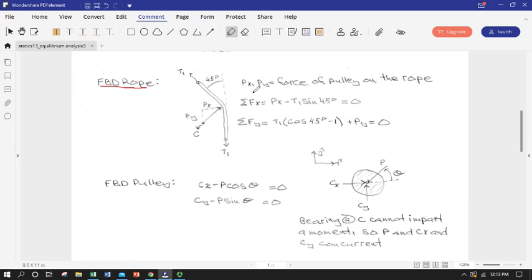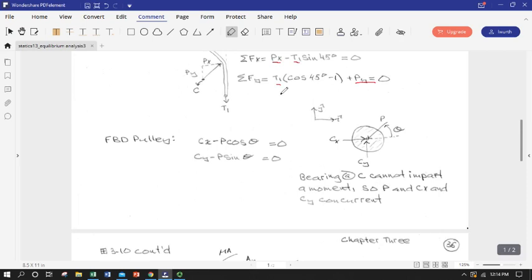So there's no moments permitted here. So we can write some equations of equilibrium taking advantage of the fact that we already know T1 and resolve whatever forces are coming from the pulley pushing on the rope and represent it as PX and PY. So we can write those two equations and we already know T1 so we could solve for both PX and PY with this FBD. So we could get the force of the pulley on the rope.